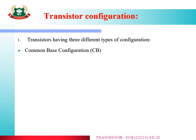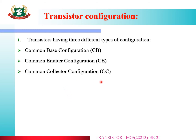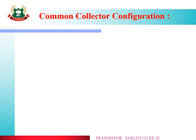The three types are: Common Base Configuration, Common Emitter Configuration, and Common Collector Configuration. We have already studied CB and CE configurations. Now we are going to study Common Collector.